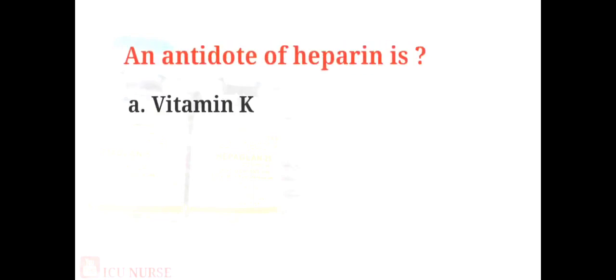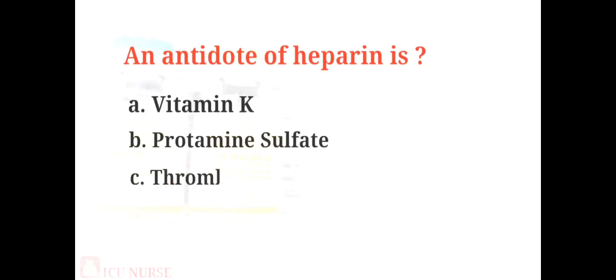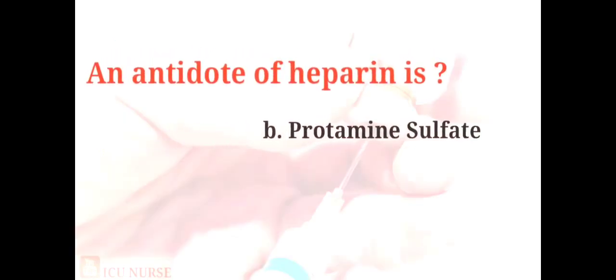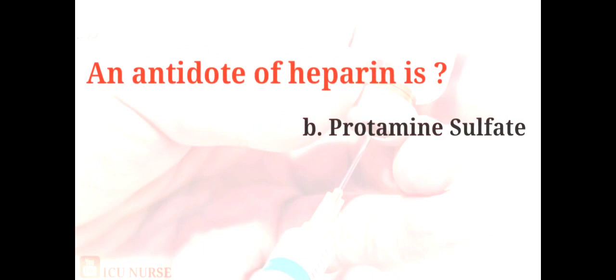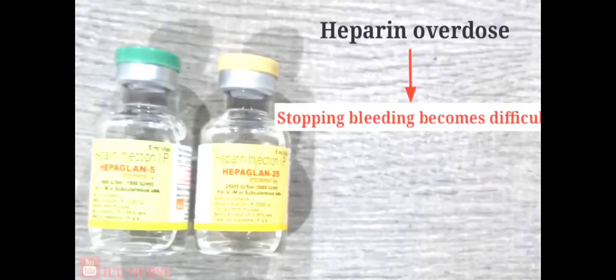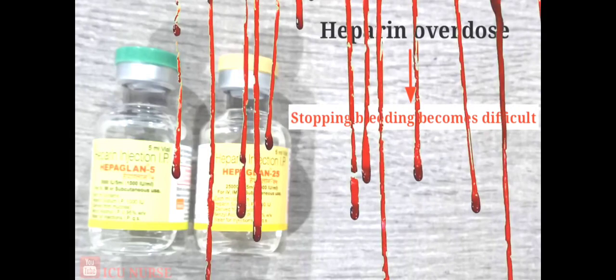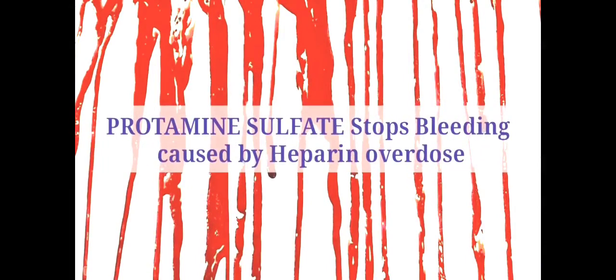An antidote of heparin is: A. Vitamin K, B. Protamine sulfate, C. Thrombin, D. Adrenaline. The answer is B. Protamine sulfate. In heparin overdose, the body is unable to deploy its natural defense against hemorrhage, and life-threatening blood loss can occur quickly. Protamine sulfate is used as an antidote to heparin to stop excessive loss of blood and prevent hypovolemic shock.